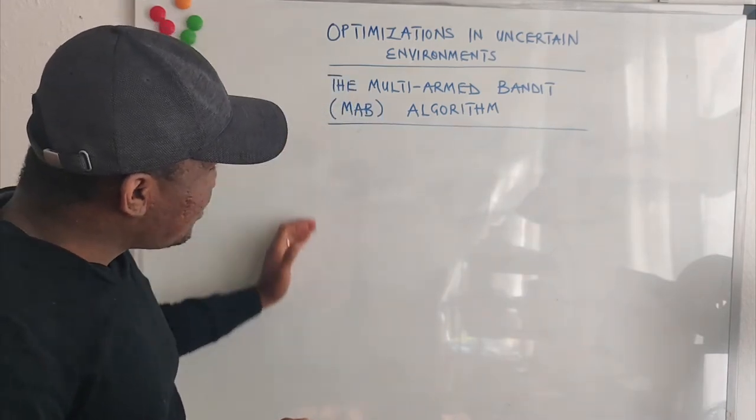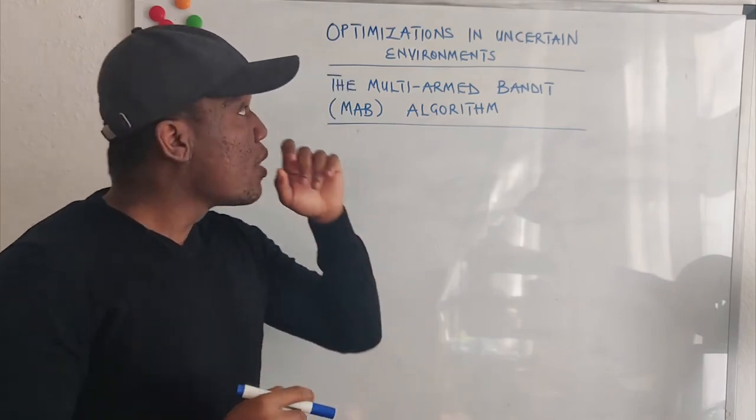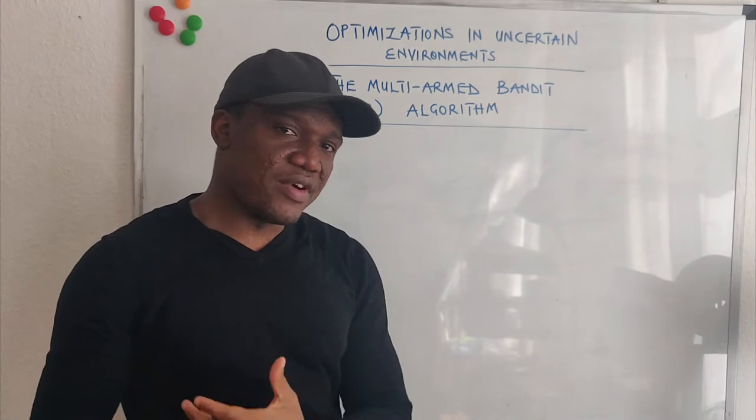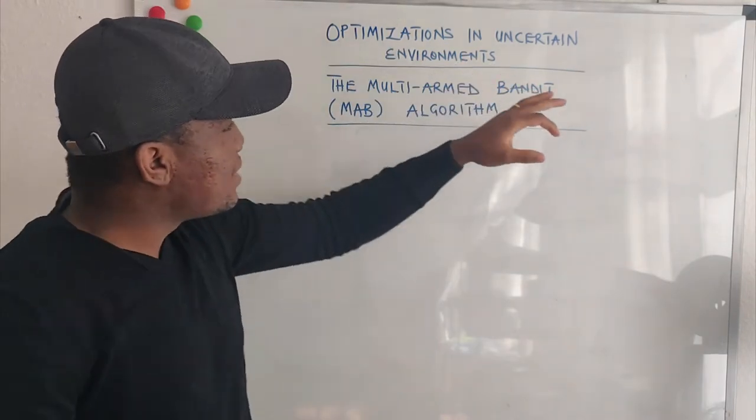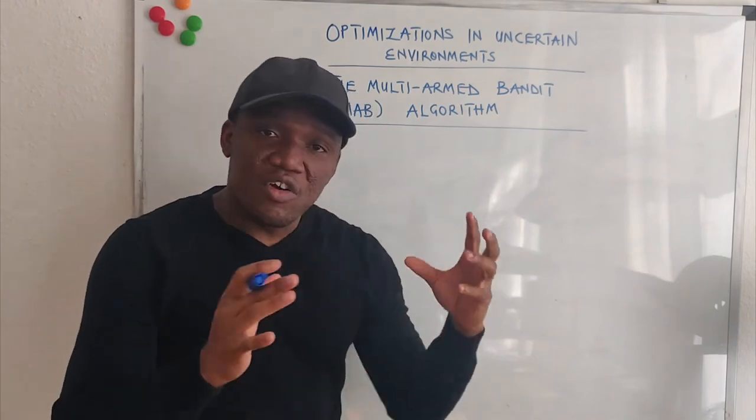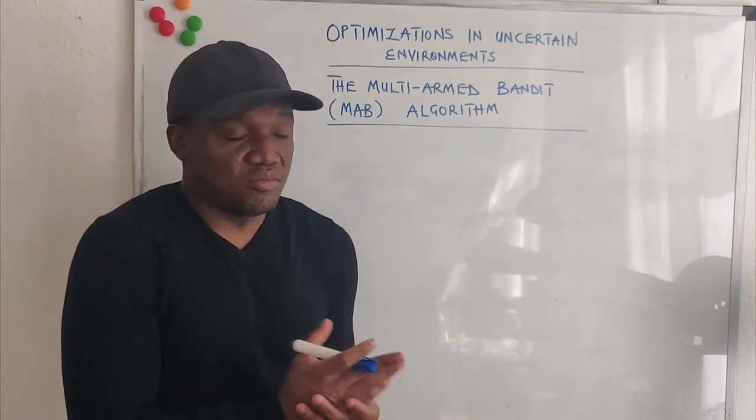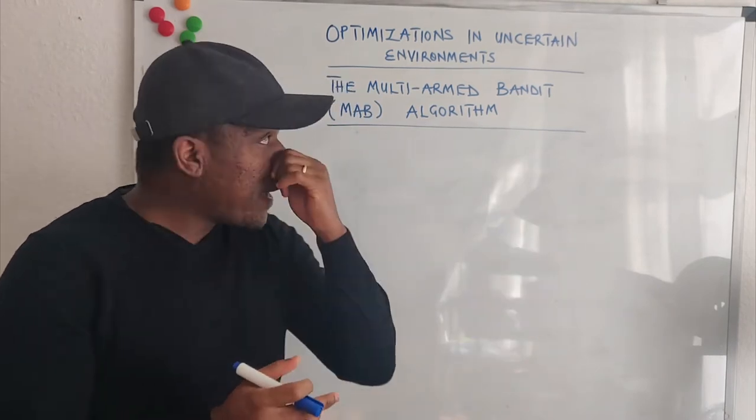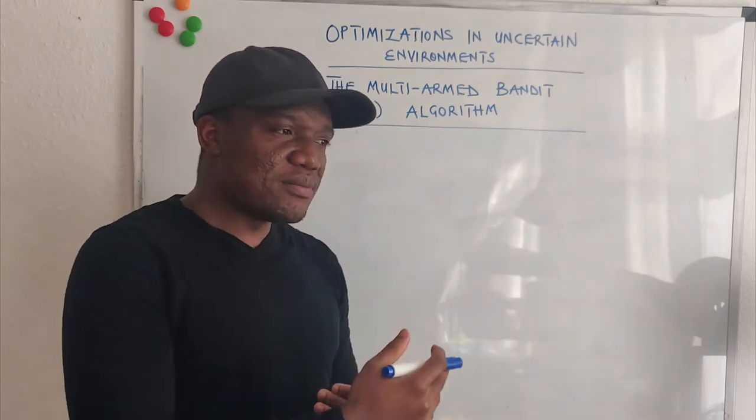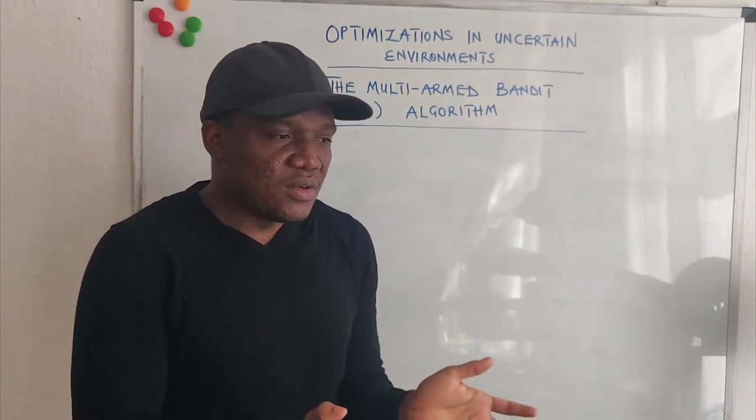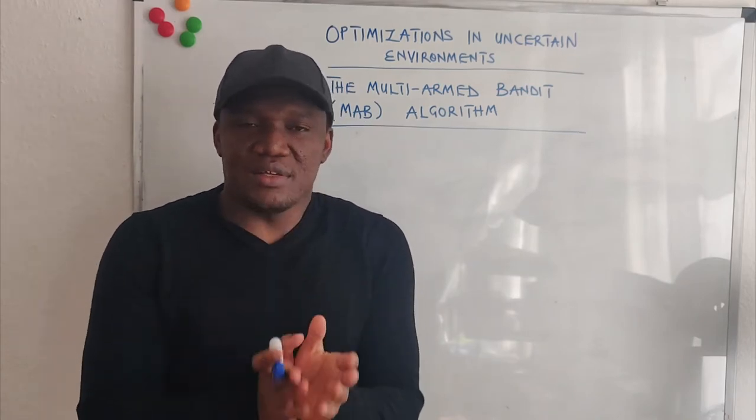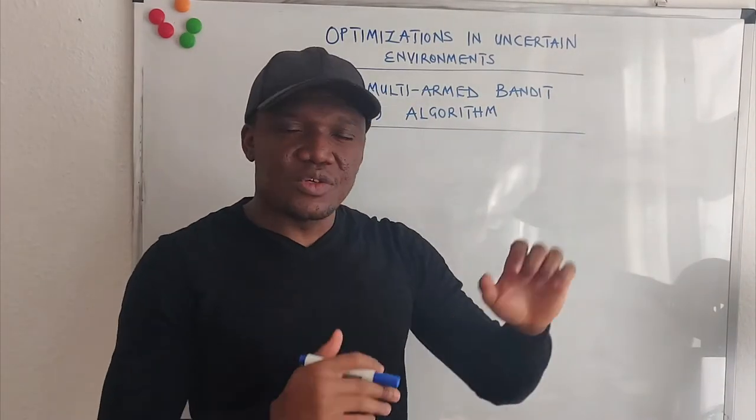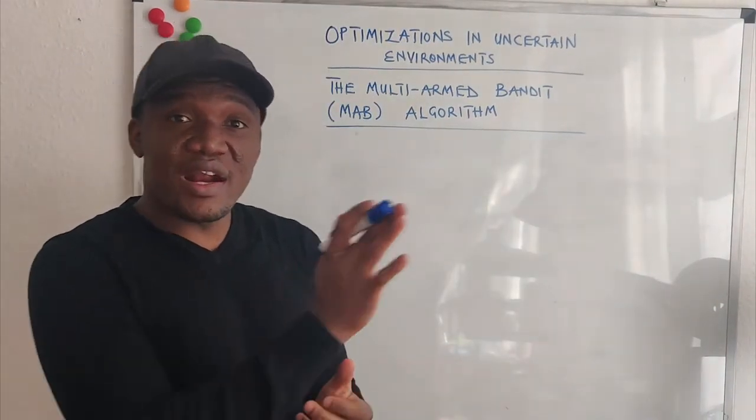And it shines or it excels very well whenever you have to optimize your actions in an uncertain environment. And by uncertain environment, what I mean is an environment which is very stochastic. But the takeaway here is that whenever you have to take optimal actions in an environment whose outcome you are not very certain of, you are not very sure of, then the Multi-Armed Bandit Algorithm is going to help you to be able to figure out over time.